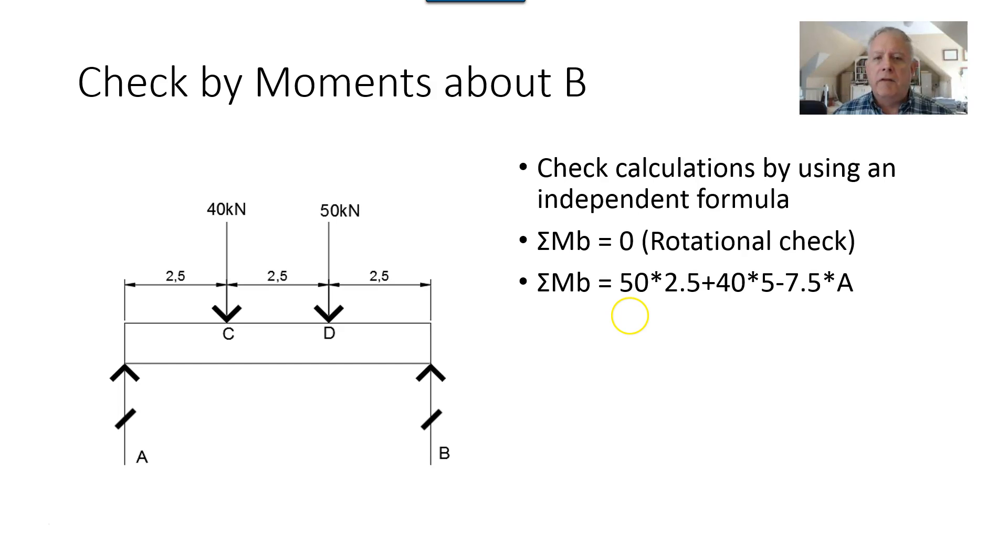So here 50, and I like to start with positive numbers, 50 times 2.5 is causing a counterclockwise rotation about B, plus 40 times 5 meters, minus 7.5 times A.